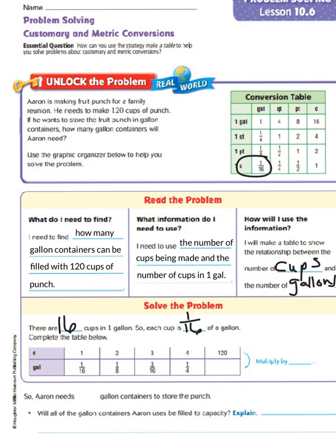So, 120 cups, if we continued it on out, would equal, because we would then be multiplying by one-sixteenth. So, 120 multiplied by one-sixteenth is going to give us seven and one-half gallons. So, Aaron needs eight because we have to round up because we don't have a half-gallon container to fill it. It wants to know how many gallon containers will he need. So, we have to round up since we would be filling one-half of a gallon container. So, Aaron needs eight-gallon containers to store the punch.